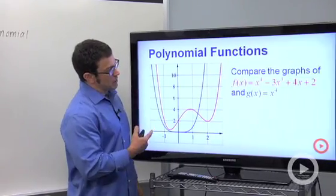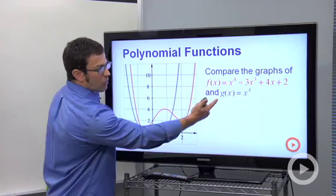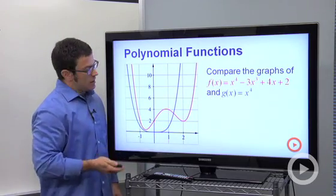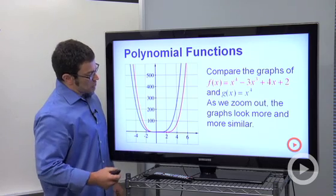I've got two functions graphed here. One of them is the polynomial f, and the other is a power function g. Let's see what these look like when we zoom in on them. Actually, we're zooming out.